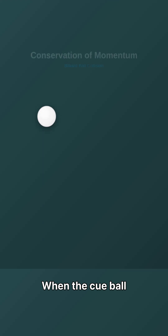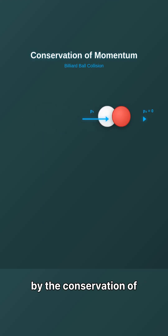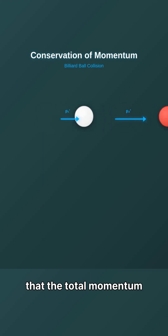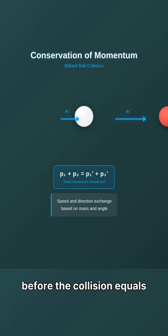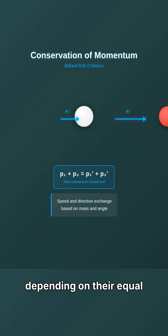When the cue ball collides with another ball, the interaction is governed by the conservation of momentum, a principle stating that the total momentum before the collision equals the total after, allowing the balls to exchange both speed and direction depending on their equal masses and the angle of impact.